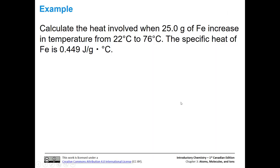Let's do a quick little problem here. We're going to calculate the heat involved when 25 grams of iron increase in temperature from 22 degrees to 76 degrees C. And we're given the specific heat of iron as 0.449 joules per gram degrees C. Go ahead and pause the video and use the equation to calculate the heat for this system.